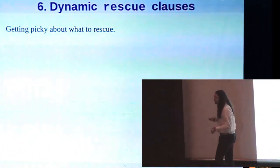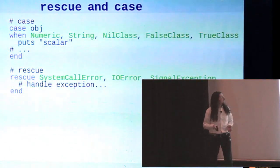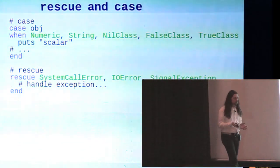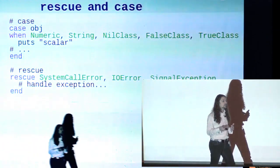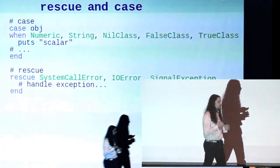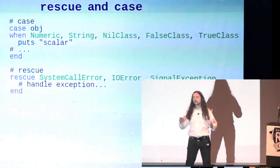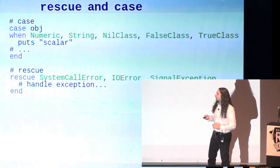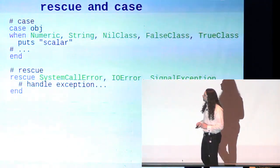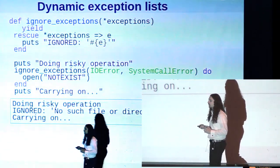So when you look at the way that Ruby rescue clauses are structured, you might see something kind of familiar. It looks a lot like Ruby case statements. And, you know, you have a list, a single class to match on, or you have a list of classes to match on. And this is not a coincidence. They are actually implemented very similarly.